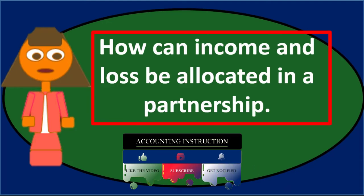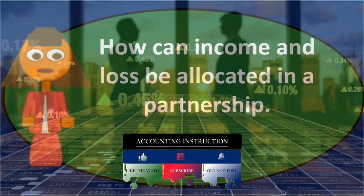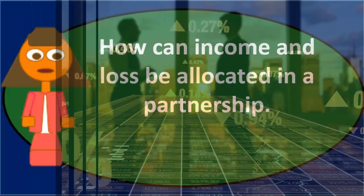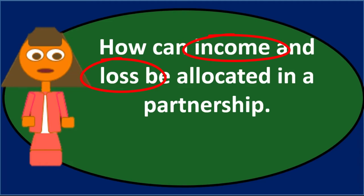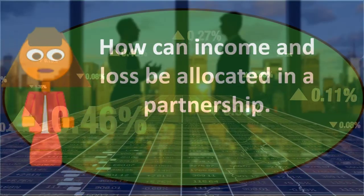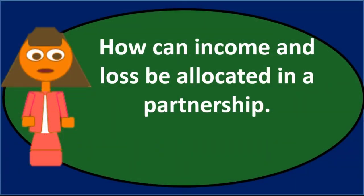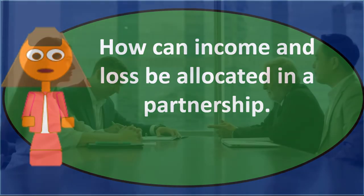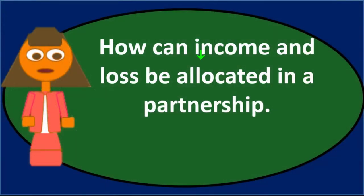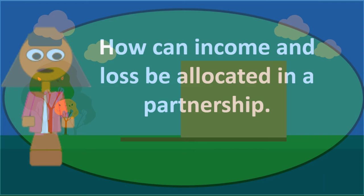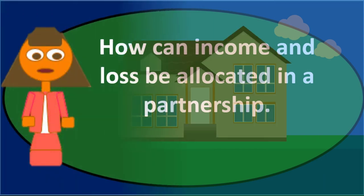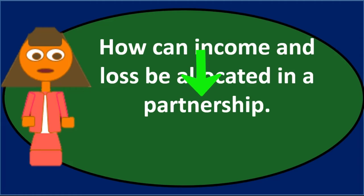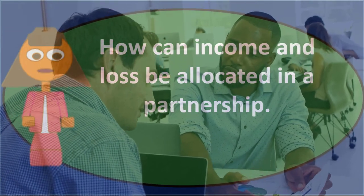So those three methods — and combinations of them — are typically how partnership income is allocated: a straight percentage allocation (even or uneven), a capital-based distribution to incentivize investment, and a salary-type allocation to compensate time. The varying factors come down to what each partner contributes. Just like roommates sharing an apartment where the bedrooms aren't equal, it can be fair for one person to pay more or take on more chores in exchange for a better arrangement.